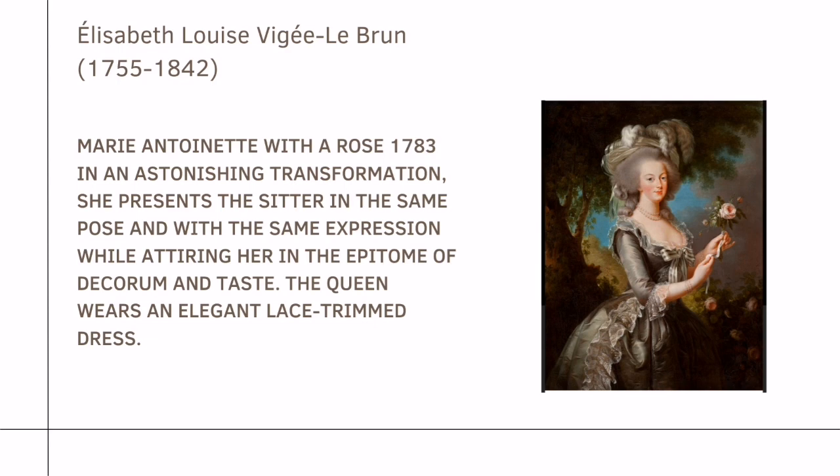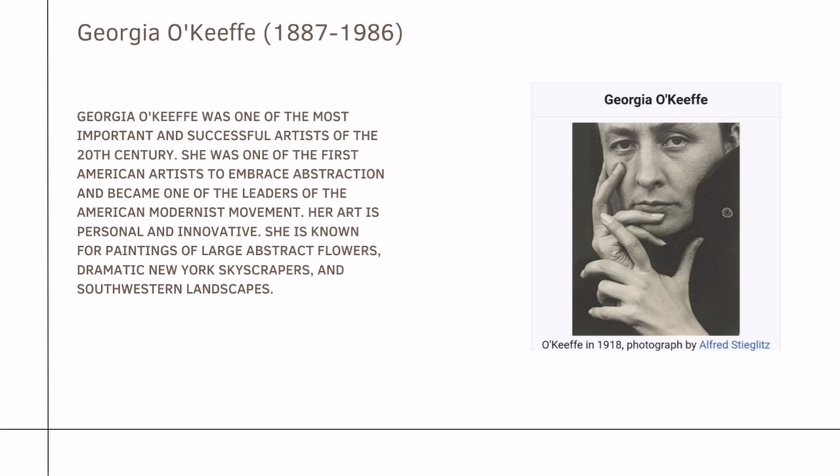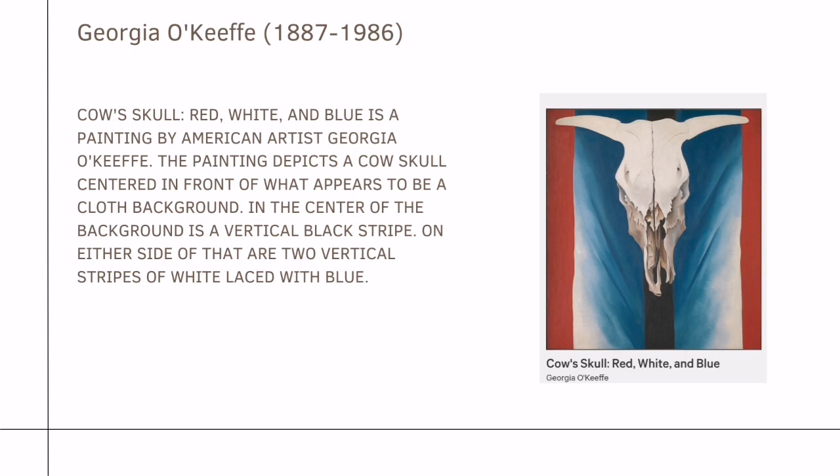The last artist is Georgia O'Keeffe, one of the most important and successful artists of the 20th century. She was one of the first American artists to embrace abstraction and became one of the leaders of the American modernist movement. Her art is personal and innovative. She is known for paintings of large abstract flowers, dramatic New York skyscrapers, and southwestern landscapes. Her famous work is Cow Skull: Red, White and Blue, a painting by American artist Georgia O'Keeffe. The painting depicts a cow skull centered in front of what appears to be a cloth background, with a vertical black stripe in the center and two vertical stripes of white laced with blue on either side.